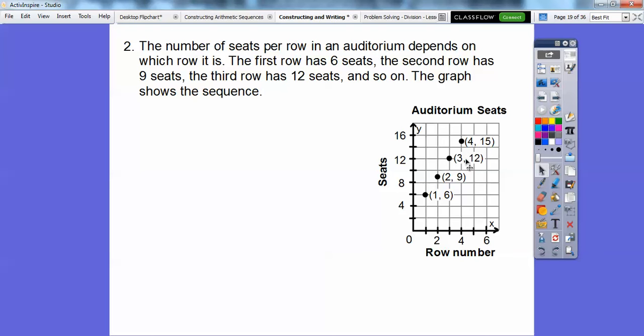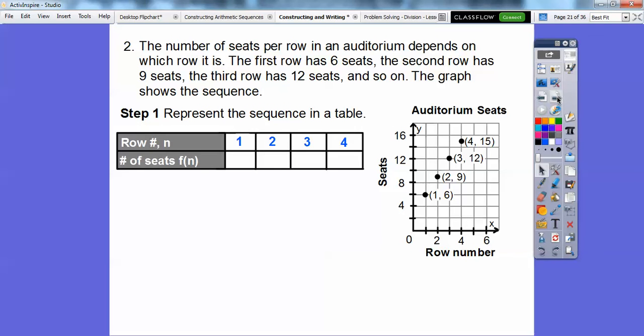This is our domain: 1, 2, 3, 4. This is our range: 6, 9, 12, 15. When we put those in the table, there's the 1, 2, 3, 4 and there's the 6, 9, 12, 15.